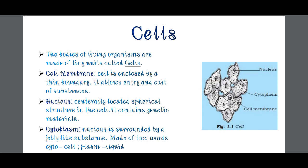The cell was discovered by Robert Hooke. Cells are too small in size and cannot be seen by the naked eye. They can only be seen under the microscope. A microscope is an instrument used to see objects that are too small - we can see small objects in a magnified way with the help of a microscope.